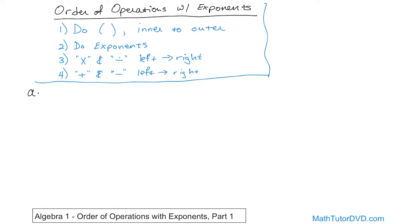What if we have a times a times b times b times b? We have the variable a multiplied by itself twice and the variable b multiplied by itself three times. How do we write that as an exponent? You write it as a squared times b cubed — a squared because it's multiplied by itself twice, b to the power of three because it's multiplied by itself three times. You don't need a multiplication symbol between them because it's understood that two variables written next to each other automatically means multiplication.